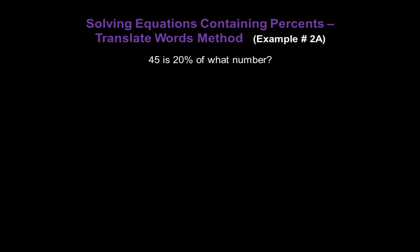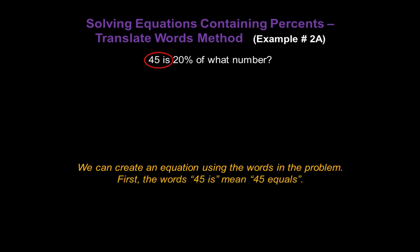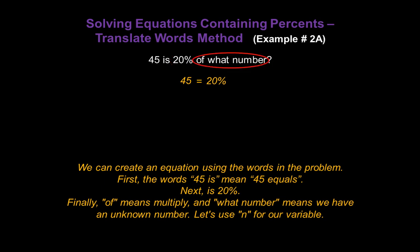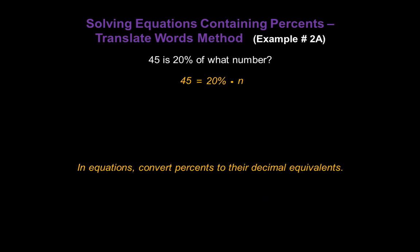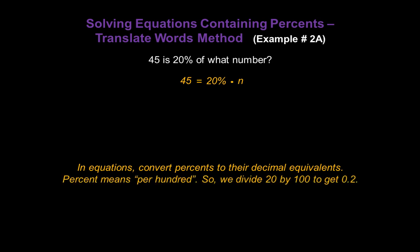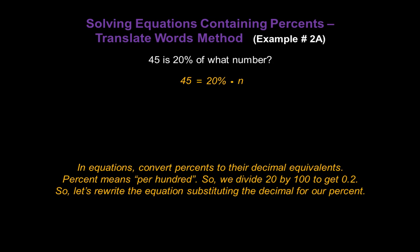Next example: 45 is 20 percent of what number? Again, we can create an equation using the words in the problem. The words '45 is' mean '45 equals.' Next is 20 percent — let's add that to our equation. 'Of' means multiply, so let's put a multiplication symbol in there, and 'what number' means we have an unknown — let's use n for our variable. In equations, you want to convert percents to their decimal equivalents. Percent means per hundred, so we divide 20 by 100 to get the decimal equivalent of 0.2. Rewriting the equation with the decimal substituted for the percent gives us 45 equals 0.2 times n.